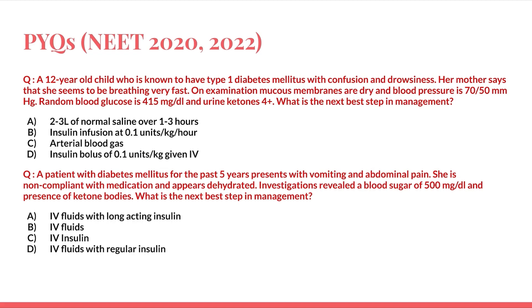For the second question, the patient has had diabetes for five years, presents with vomiting, abdominal pain, is non-compliant with medication, appears dehydrated, has blood sugar of 500 mg/dL, and ketone bodies present — again pointing to DKA. They have asked the next best step in management.